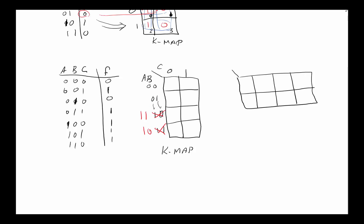This ordering ensures that from one column to the next, only one variable changes — so every adjacent square is a valid neighbor. This way of writing is called Gray code, which you may remember from earlier videos. The unique property of Gray code is that only one variable changes at a time between consecutive entries. So our minterm numbering across the columns becomes: 0, 1, 3, 2, and down the rows 4, 5, 7, 6.